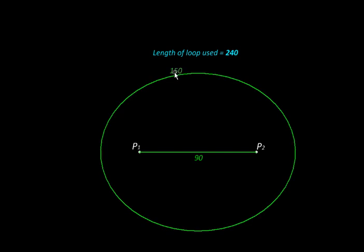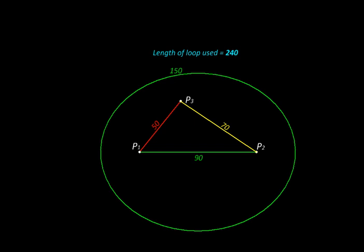Let us recap this whole process in top view. We started with two pins P1 and P2 and an active loop length of 150, which gave us this ellipse. Then we introduced a third pin which shortened our active loop length to 120, giving us a smaller confocal ellipse.